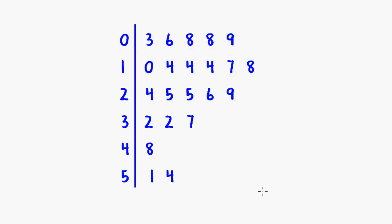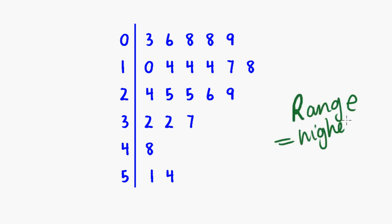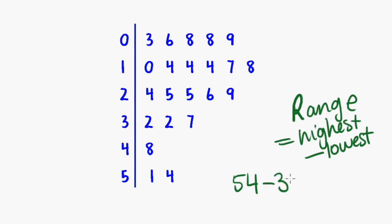What about finding the range and the interquartile range from a stem and leaf plot? Well, it works in very much the same way as from a list. The range is just the highest value minus the lowest. In this stem and leaf plot, the highest value is 54 and the lowest is 3, so the range is 54 minus 3, which is 51.